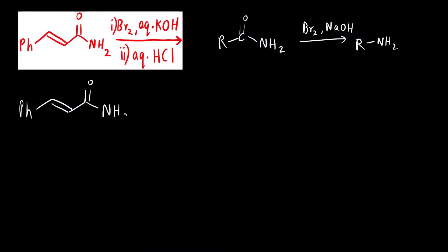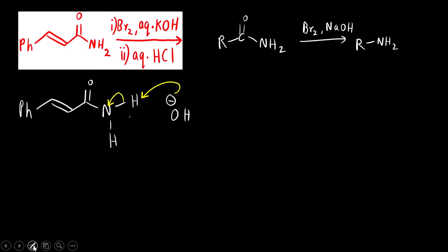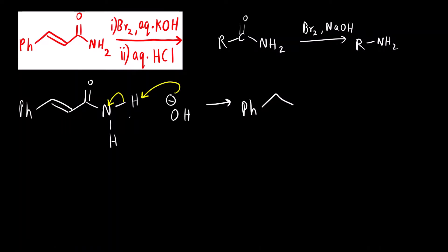The amide has a C=O and NH₂ group. The hydrogen attached to the electronegative nitrogen atom is acidic. The OH⁻ (strong base, potassium hydroxide) can abstract this proton. What we get is: Ph-C=O with N⁻, where nitrogen now carries a negative charge.